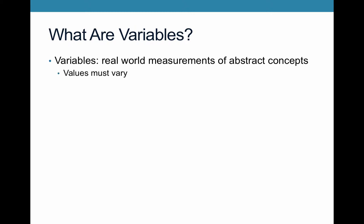Key features: variables must be able to vary. You must be able to say that a country is democratic, or less democratic, or not democratic — there's not just one fixed outcome. And variables are used to assess causal relationships. When we say that something caused something else, those somethings are variables that we're talking about.